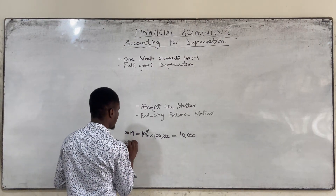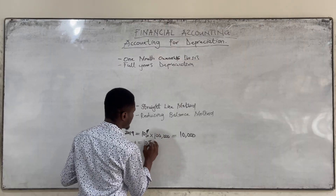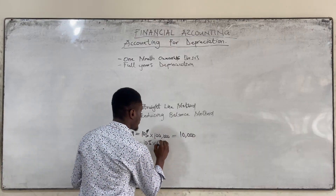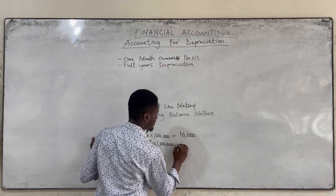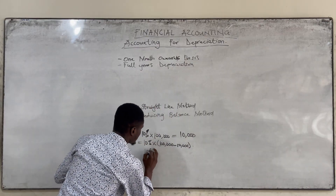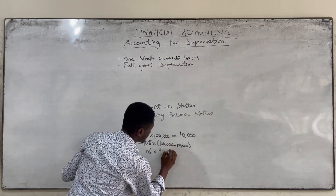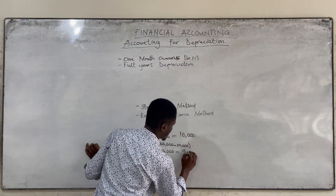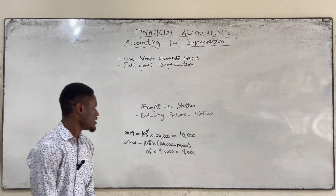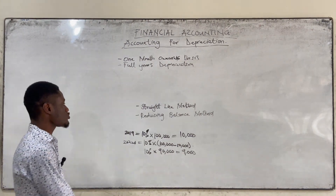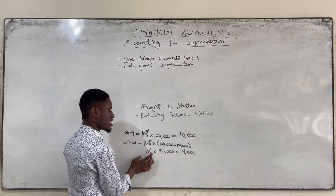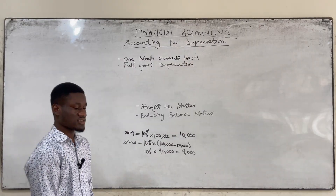For the second year, 2020, we are going to calculate on the net book value. Net book value is the cost minus the depreciation — 100,000 minus 10,000 — so the net book value is 90,000, and we are getting 9,000 for depreciation. For 2021, we take the new net book value, subtract the previous depreciation, then calculate 10% on it. That's what reducing balance is all about.